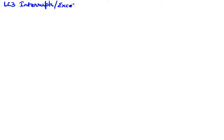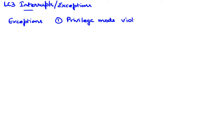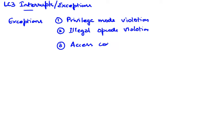In this video I will discuss LC3 interrupts and exceptions. On the LC3 machine, the following exceptions are supported: the first exception is a privilege mode violation, the second is an illegal opcode violation, and the third is an access control violation. Let's understand what each of these are.